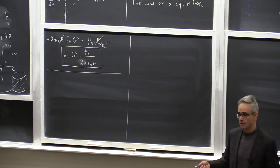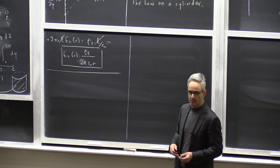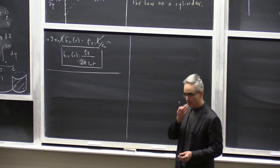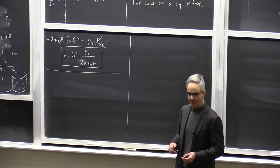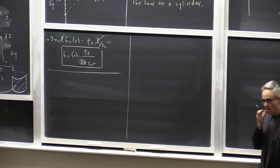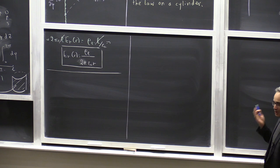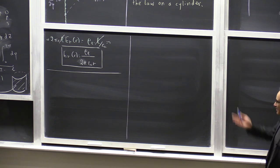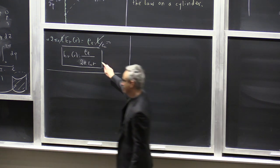A student asks: is the reason we use this approach because we don't know the charge at a specific observation point? Clarification: there is no charge at the observation point. The charge distribution — the line charge — is given. What we don't know is the electric field; that is what we are calculating using Gauss's law.